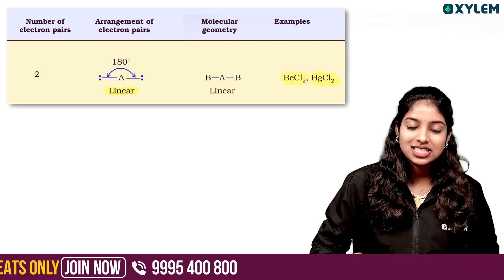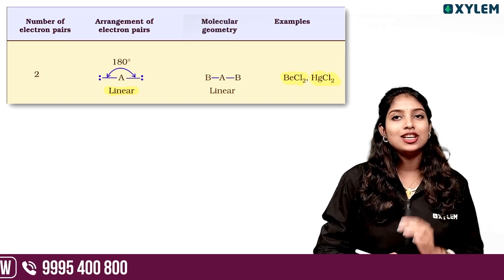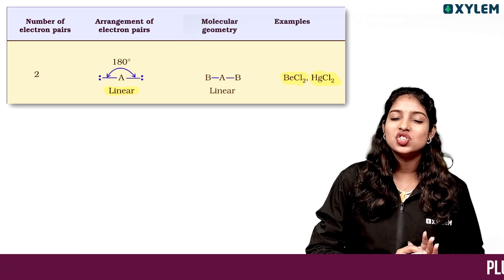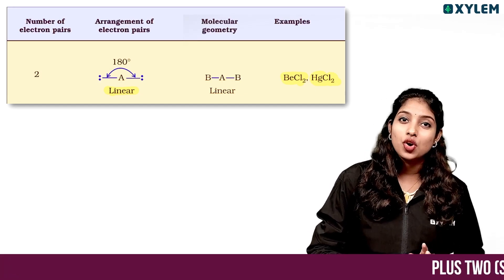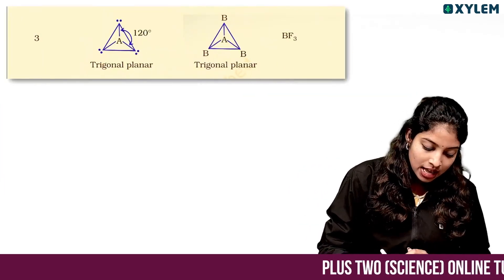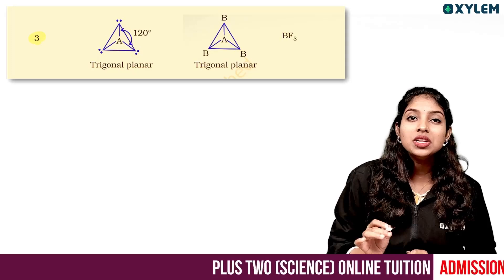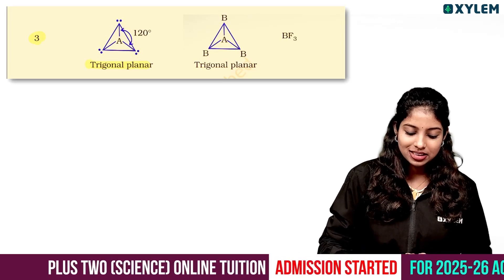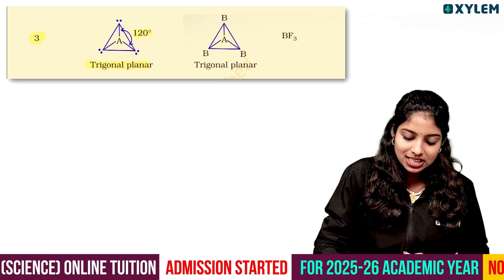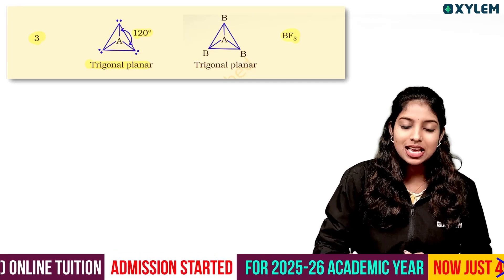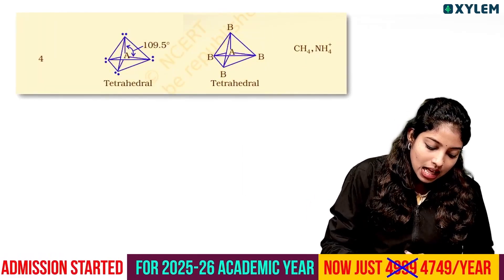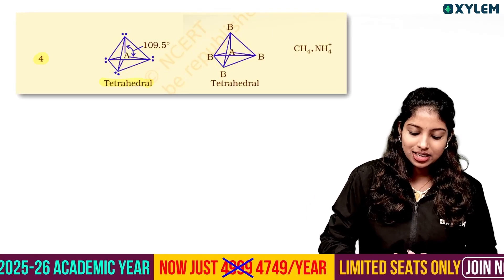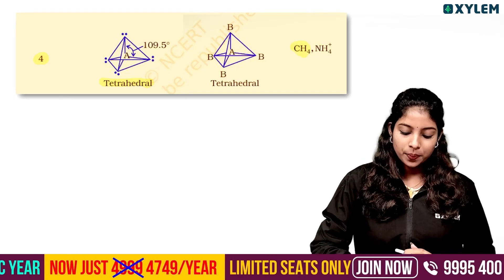Examples of linear geometry include BeCl2 and HgCl2. With 3 bond pairs, we get trigonal planar geometry with a bond angle of 120 degrees — example: BF3. With 4 bond pairs, we get tetrahedral geometry — example: CH4, with a bond angle of 109.5 degrees.